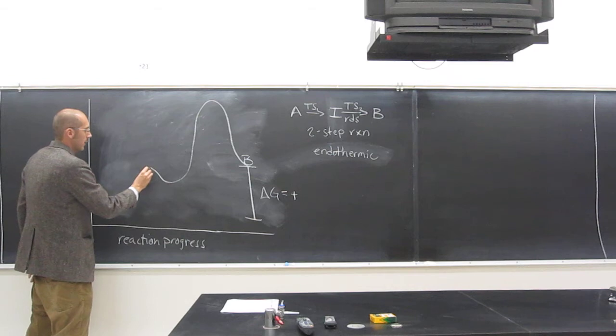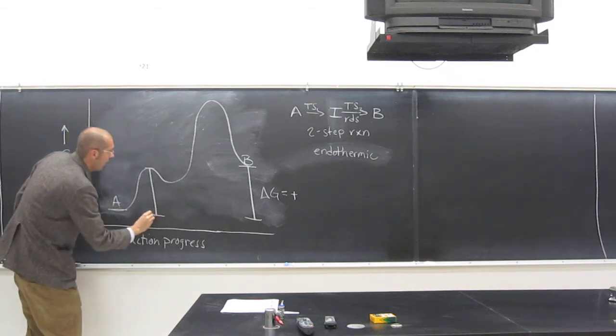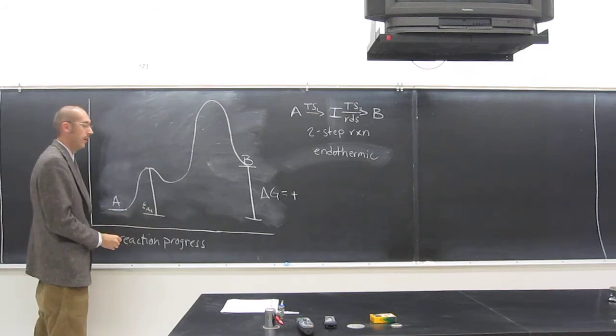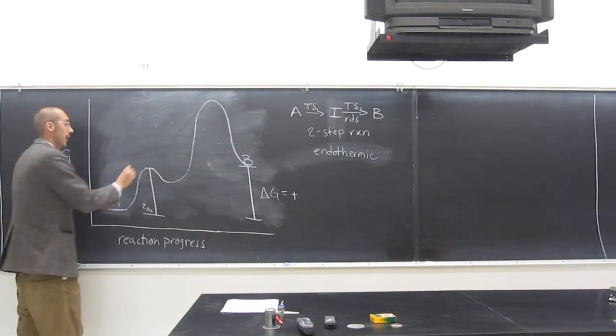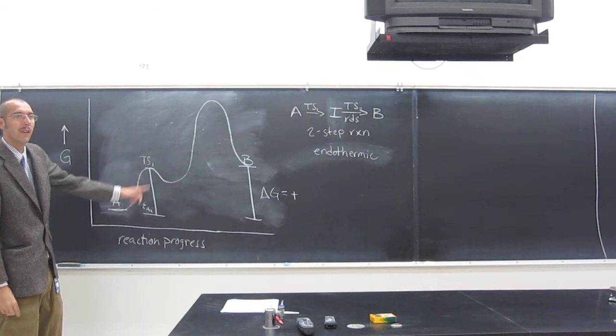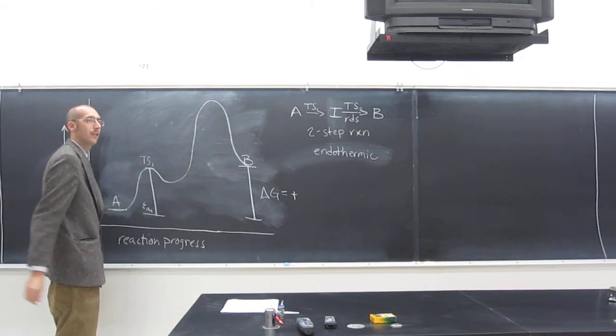What's this? So notice this one. Ea1, or delta G double dagger 1, it starts from A and goes up to TS1. So that's one that people always want to start up here for some reason. So don't do that.